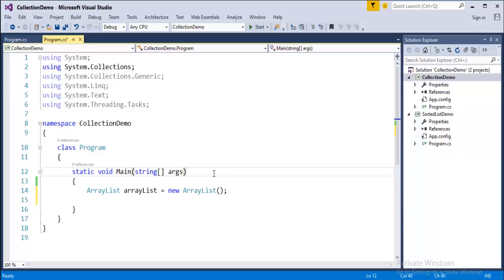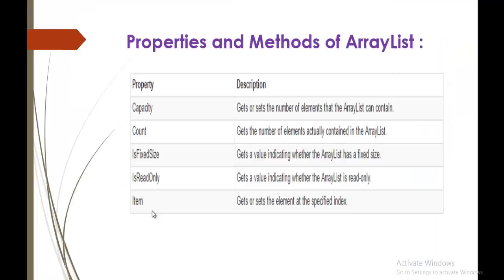Now let's explore the properties and methods of ArrayList. The properties include: Capacity — gets or sets the number of elements that ArrayList can contain; Count — counts the number of elements present in the ArrayList; IsFixedSize — tells you whether the ArrayList has a fixed size; IsReadOnly — indicates whether the ArrayList is read-only; and Item — gets or sets the element at a specific index.